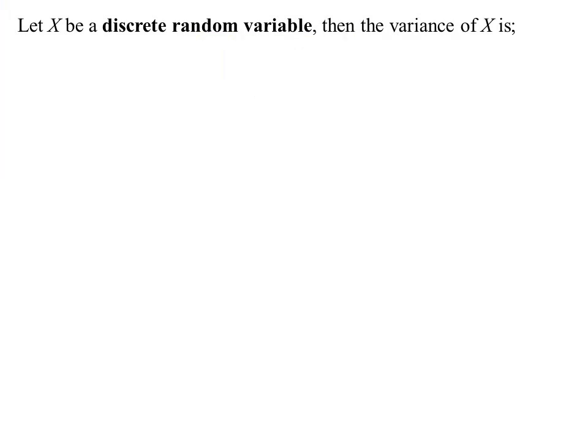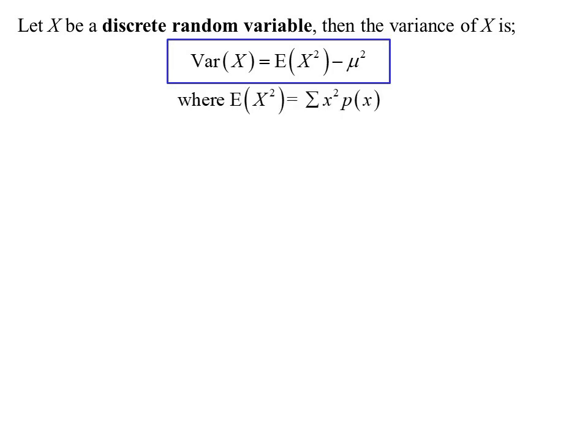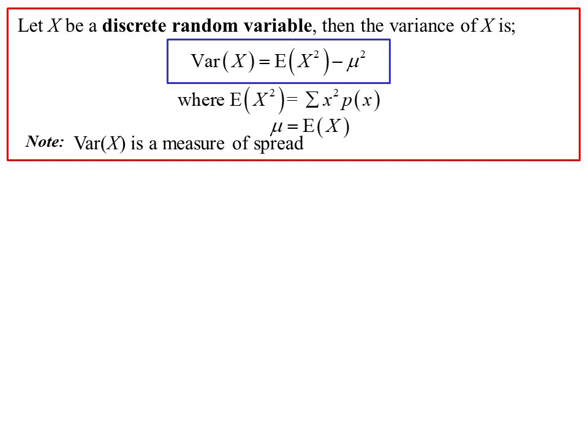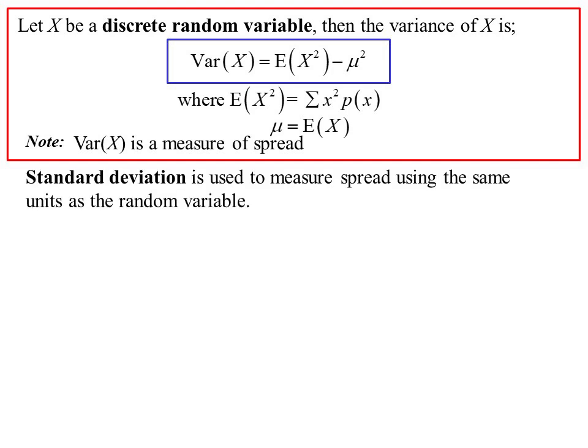Then there's the idea of variance. The easiest way: the expected value of X² minus the average squared. The expected value of X² is the sum of x²·p(x), and μ is our expected value. Variance is a measure of spread - how spread out the data is.